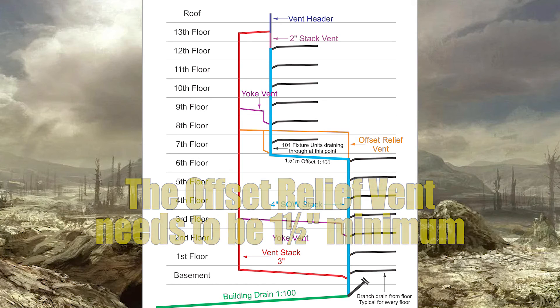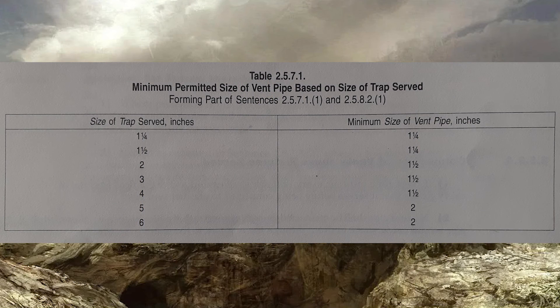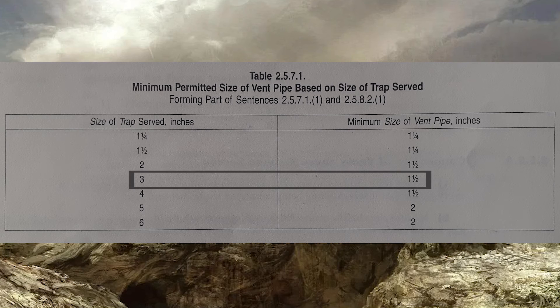I also need to check table 2571, which is the minimum size of vent based on size of traps served. In the scenario where you have a vent stack, you will have at least one water closet in there. Therefore your minimum size of trap is three inch, and the minimum size of vent will be one and a half inches.